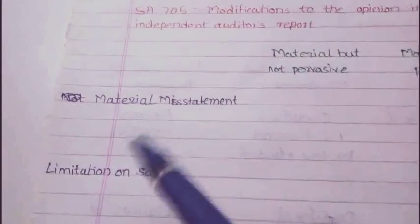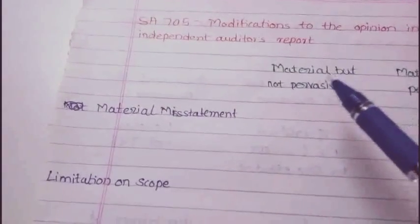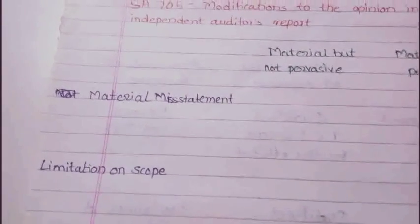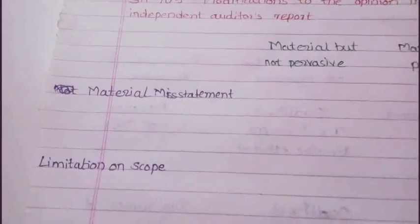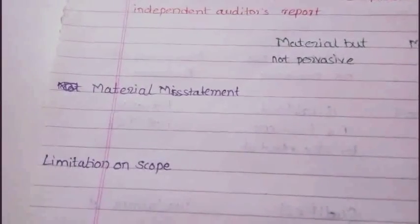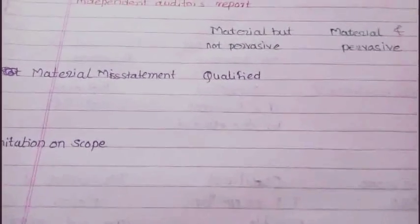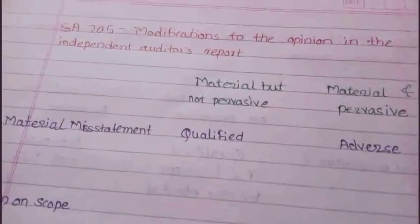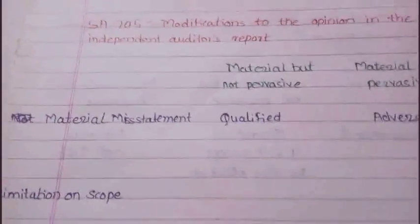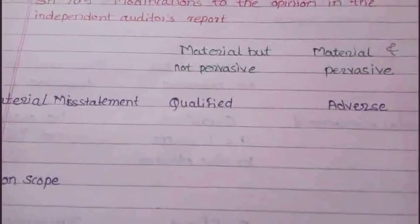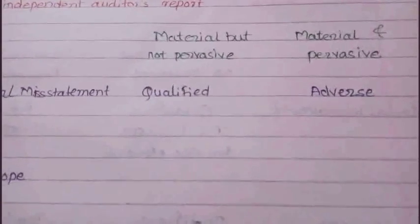If there is a material misstatement and it is not pervasive — meaning it is affecting only one part or one account balance, like inventory — then the opinion will be a qualified opinion. But if the material misstatement is pervasive and is affecting the whole financial statement, then it will be an adverse opinion.